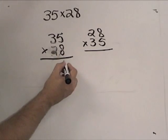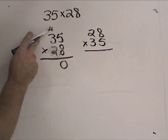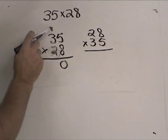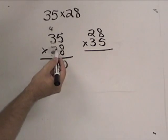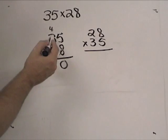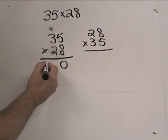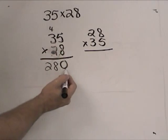We carry the 4 down here. Because the 4 in the 40 is in the tens place, we carry it up here and add it to our next product. We're going to have 8 times 3, which is actually 8 times 30, is 24, and add 4 to that is 280. So 8 times 35 is 280.